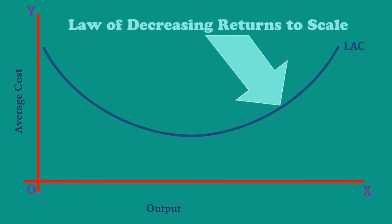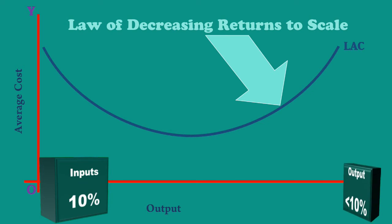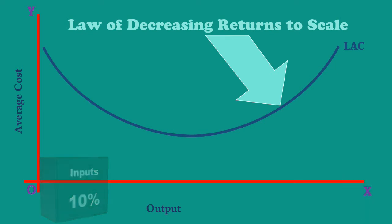This is due to the operation of the Law of Decreasing Returns to Scale. In this segment, output increases less than proportionately for a given proportionate increase in inputs. If all the inputs are increased by 10%, output will increase by less than 10%. Hence, the average cost starts increasing.